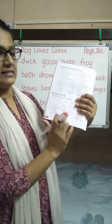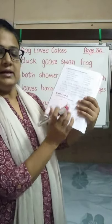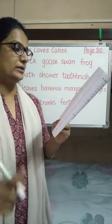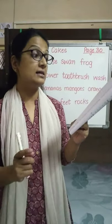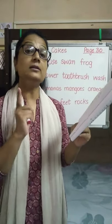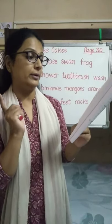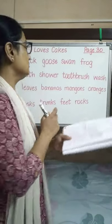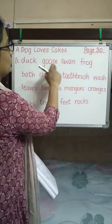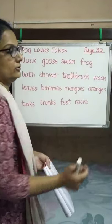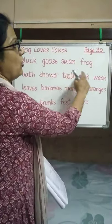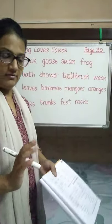This is Exercise A — Words in Action. Now what are we supposed to do in this exercise? Circle the odd word in each group. There are four words written in a group, and we have to circle the odd word.